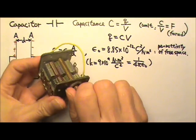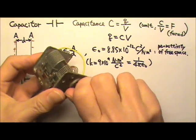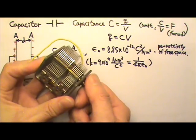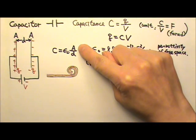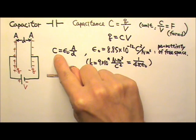This one here is a variable capacitor. I can turn the knob to adjust the overlapping area of the plates, changing the effective area of the capacitor, and therefore changing the capacitance.